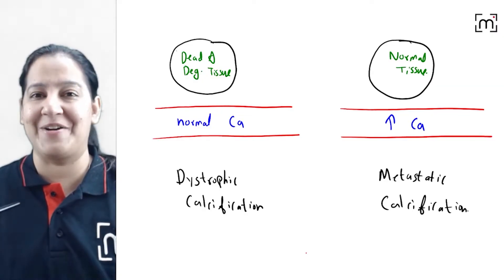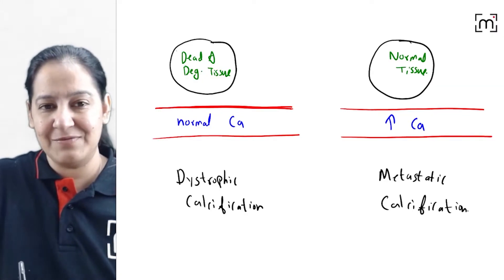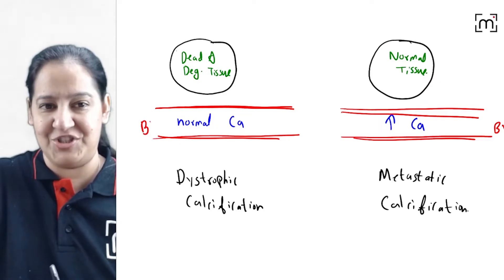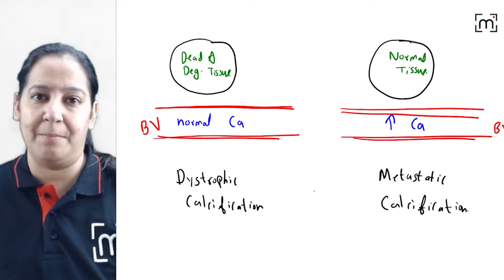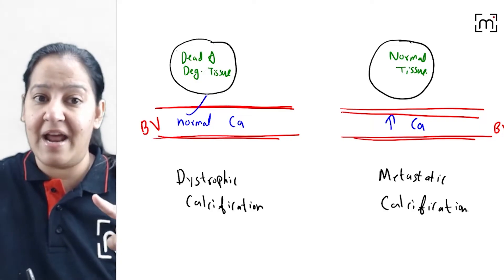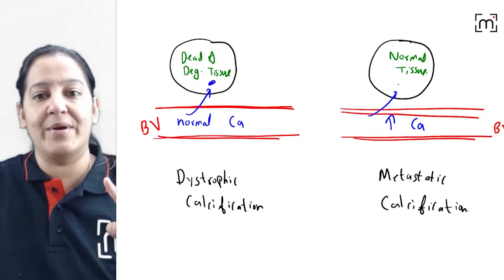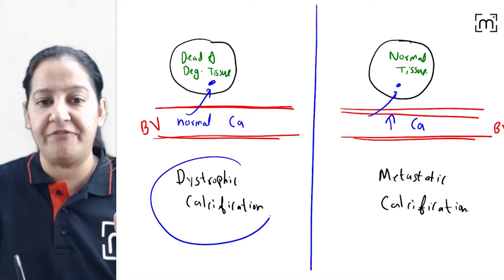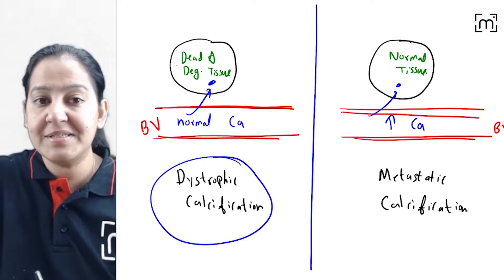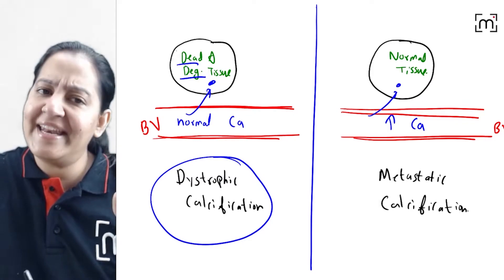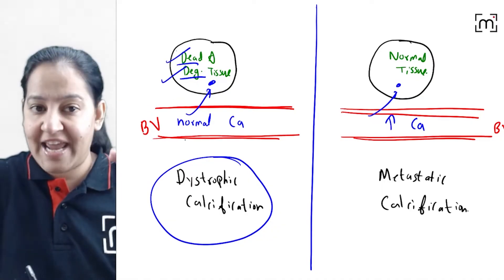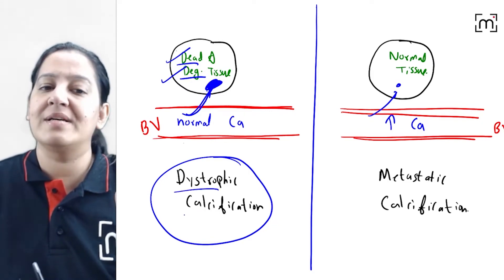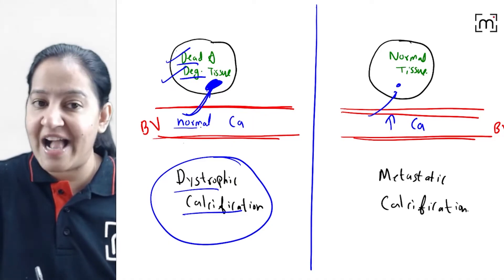In this diagram, you can see two blood vessels. In the blood, calcium is present. When the calcium leaves the blood and gets deposited in the tissue, it is known as calcification. In dystrophic calcification, the problem is that the tissue is dead and degenerated. Calcium will leave the blood and get deposited in the dead and degenerated tissue. Here there is no problem in the calcium level in the blood — the calcium level is normal.